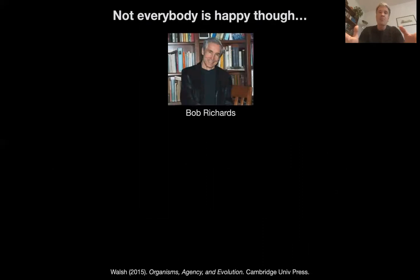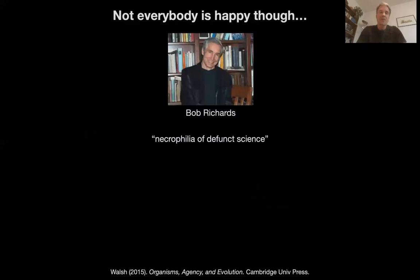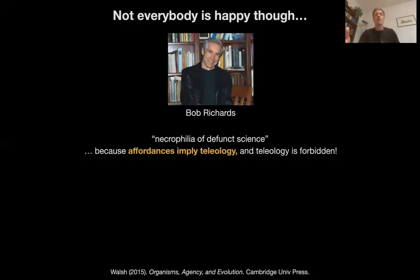Not everybody is happy about this type of argument because it's heavily teleological. Bob Richards, a historian of science, calls this the 'necrophilia of defunct science' — a resurrection of the final cause, teleological explanations. Affordances imply teleology and teleology is forbidden. There are three really big problems with teleology and we have to be very careful that teleological arguments don't fall into one of these traps.